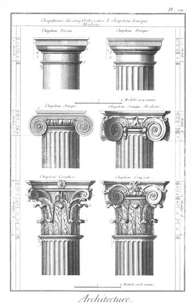Doric order: one of the three orders or organizational systems of ancient Greek or classical architecture, characterized by columns which stood on the flat pavement of a temple without a base, their vertical shafts fluted with parallel concave grooves, topped by a smooth capital that flared from the column to meet a square abacus at the intersection with the horizontal beam that they carried.